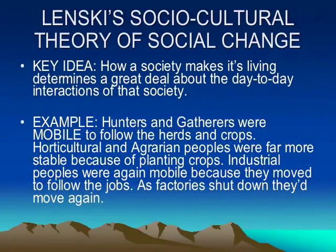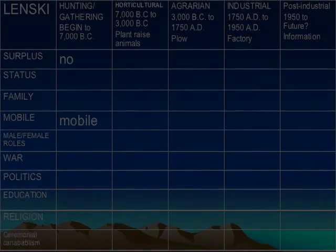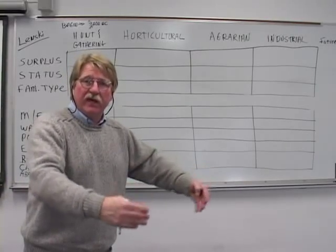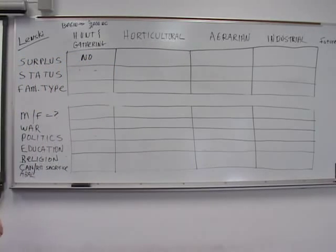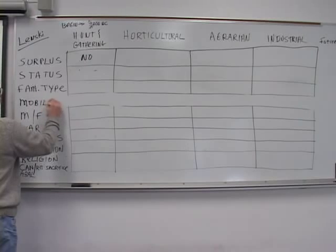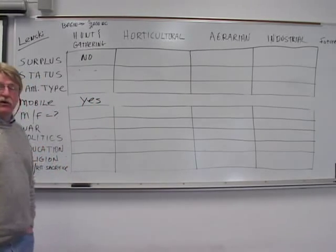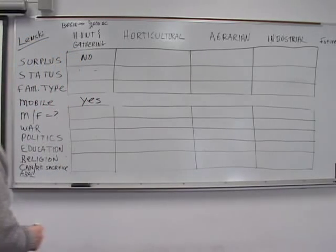Did they have a surplus? Well, not really. And if they had a surplus, they couldn't have much to do with it because they didn't have a way to store it or carry it around. So they're basically eating what they have available, which means they've got to move around. So I'm going to put mobility here. They were highly mobile people. They followed the herds, they followed the crops.